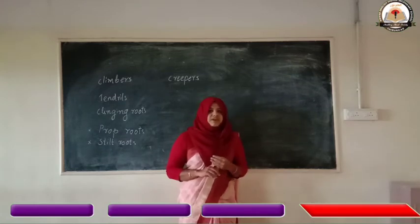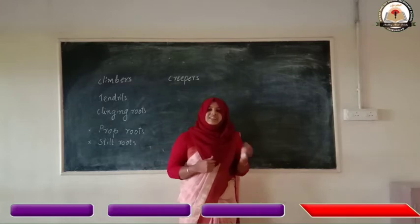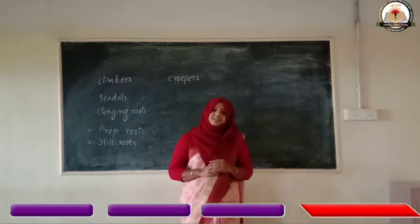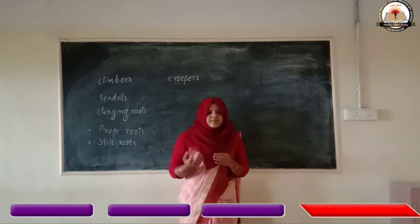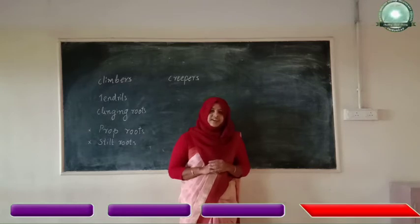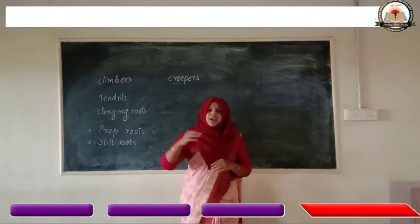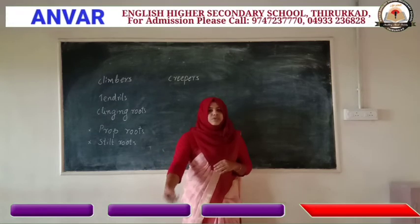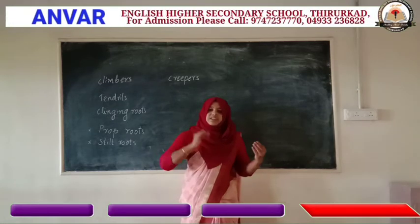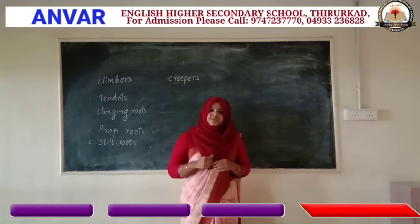The example for prop roots is banyan tree, and stilt roots can be observed in scrub pine tree. Both these two types of roots help to provide support for the plant. Normally roots help the plant to absorb water and nutrients from the soil, but prop roots and stilt roots help the plant to provide support.